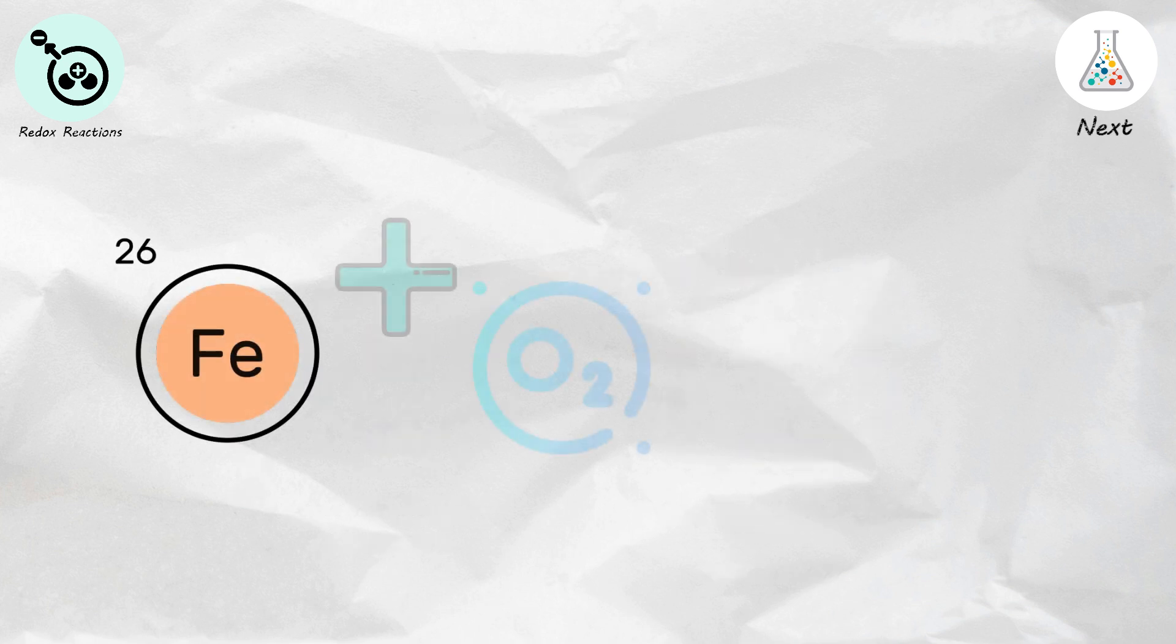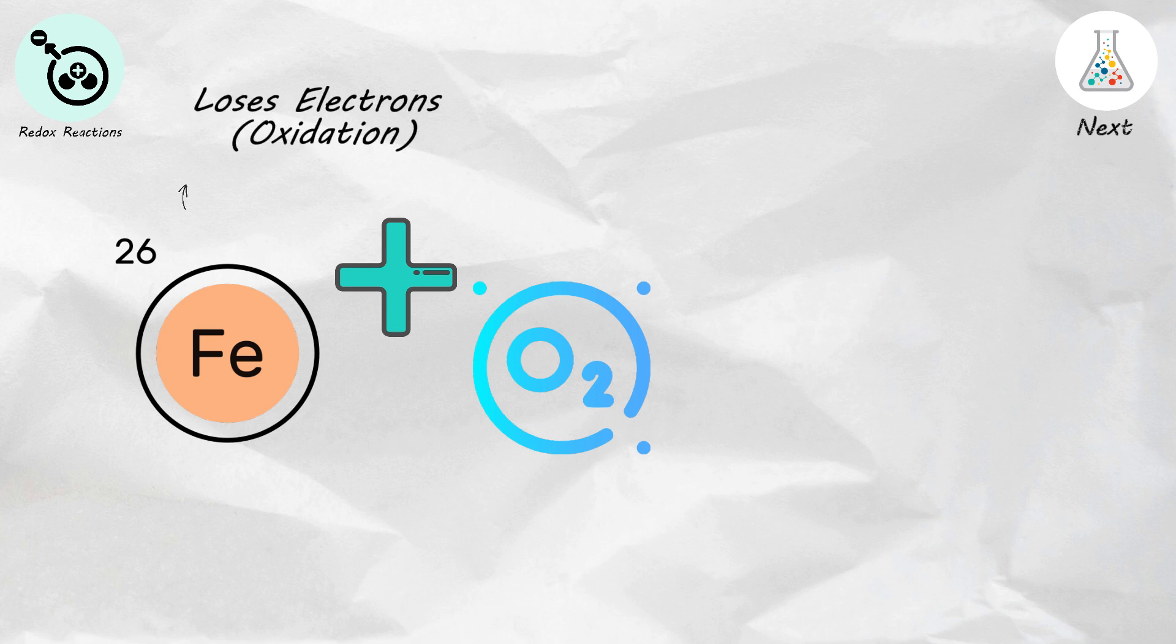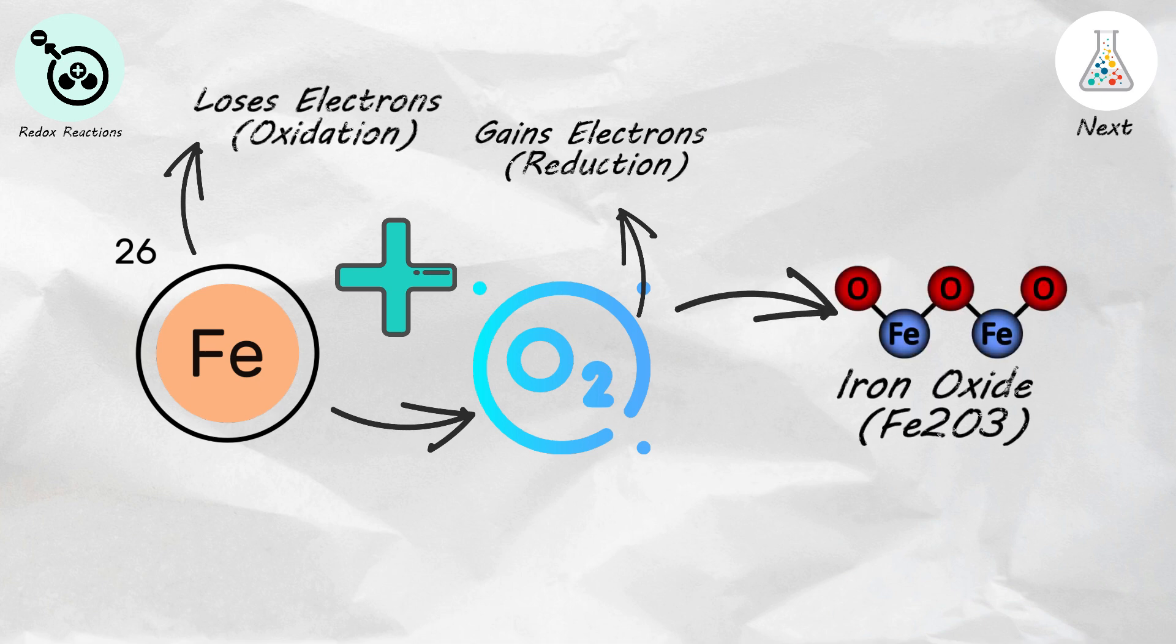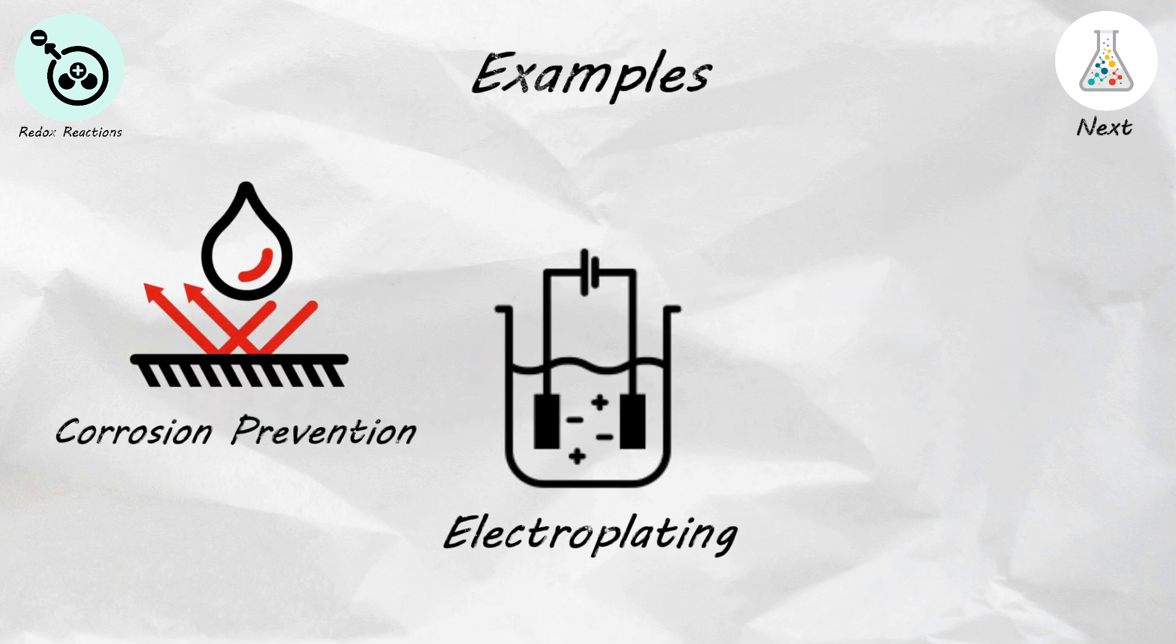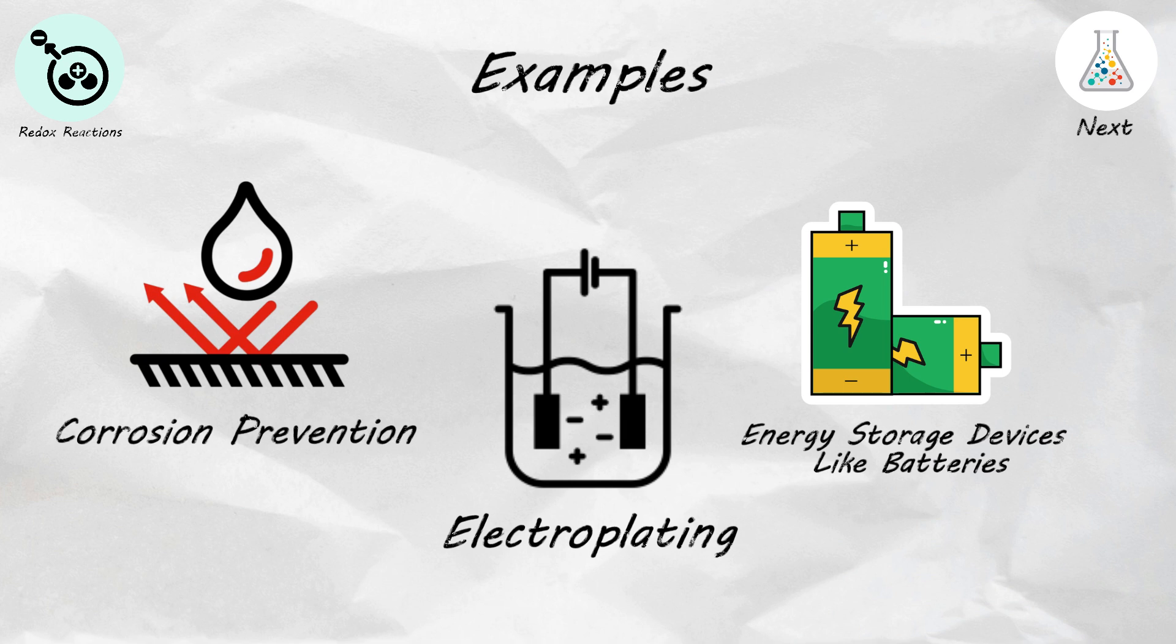When you mix iron, Fe, with oxygen, O2, iron loses electrons, oxidation, to oxygen, which gains electrons, reduction, forming iron oxide, Fe2O3, commonly known as rust. Redox reactions are utilized in corrosion prevention, electroplating, and energy storage devices like batteries.